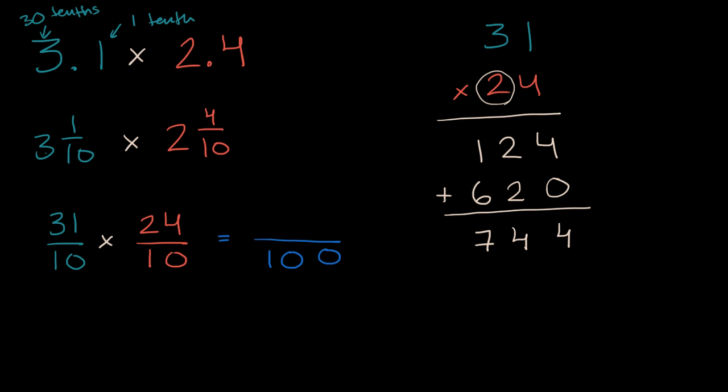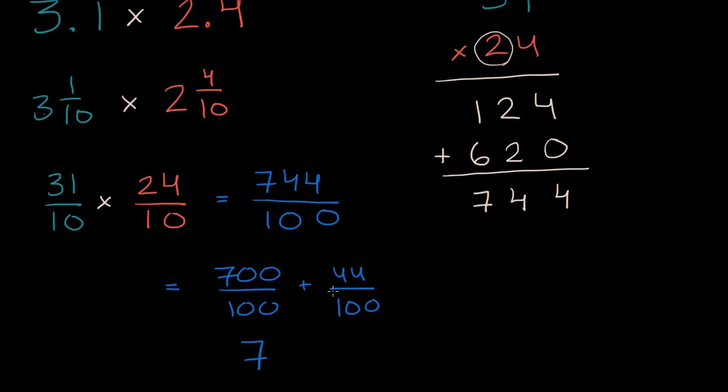So when you multiply these two things together, in the numerator you get seven hundred and forty-four hundredths, which can also be expressed as, this is the same thing as seven hundred hundredths, or seven hundred hundredths I should say, plus forty-four hundredths. And seven hundred hundredths, well that's just going to be equal to seven. So this is seven plus forty-four hundredths, which we could write as 7.44. That's our seven and forty-four hundredths. And we would be done.